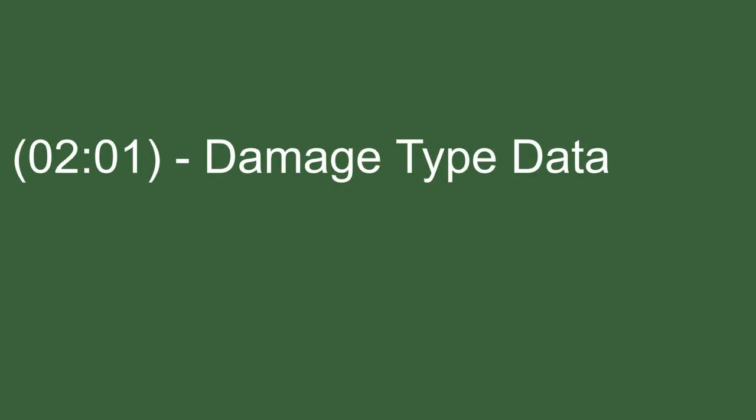This video is going to be split up into three parts. Part one will be storing the damage type data and resistance stats for the player — that'll all be done using scriptable objects. Then we'll be dragging those scriptable objects into authoring components, and when we convert them it's actually going to grab the data from the scriptable object and convert it into ECS data on components.